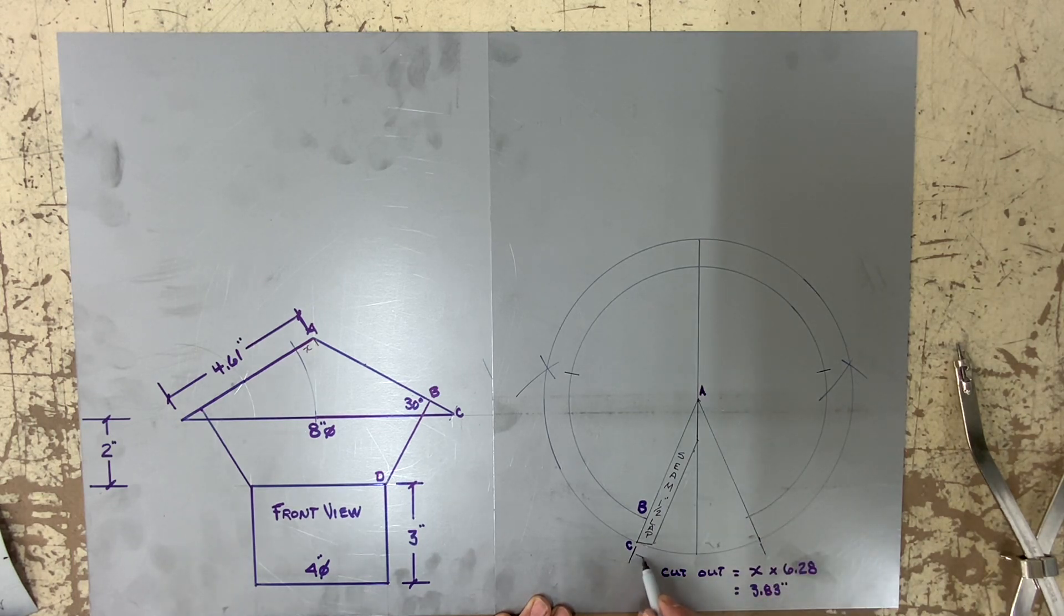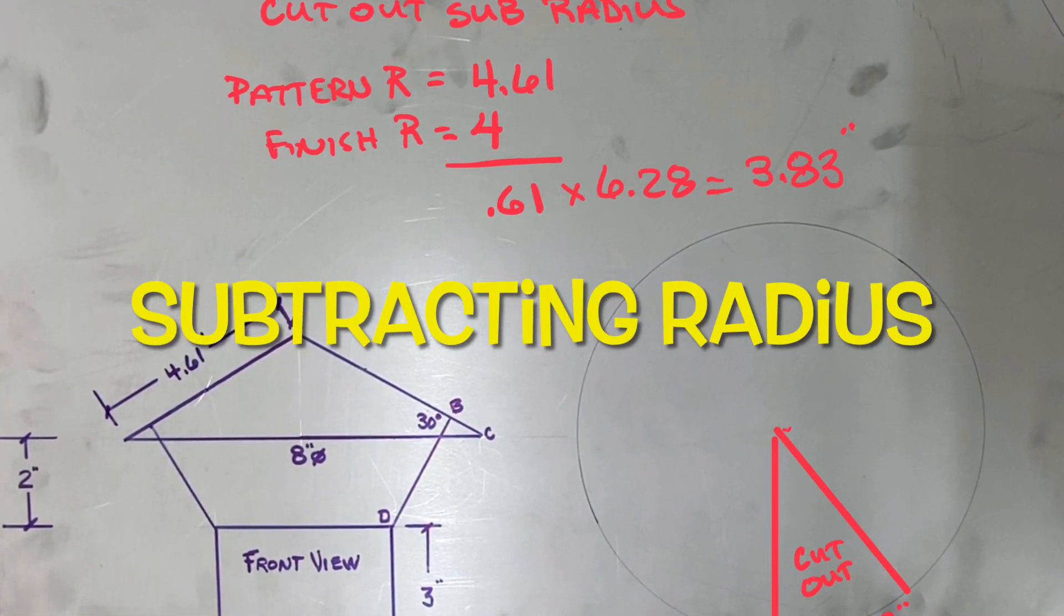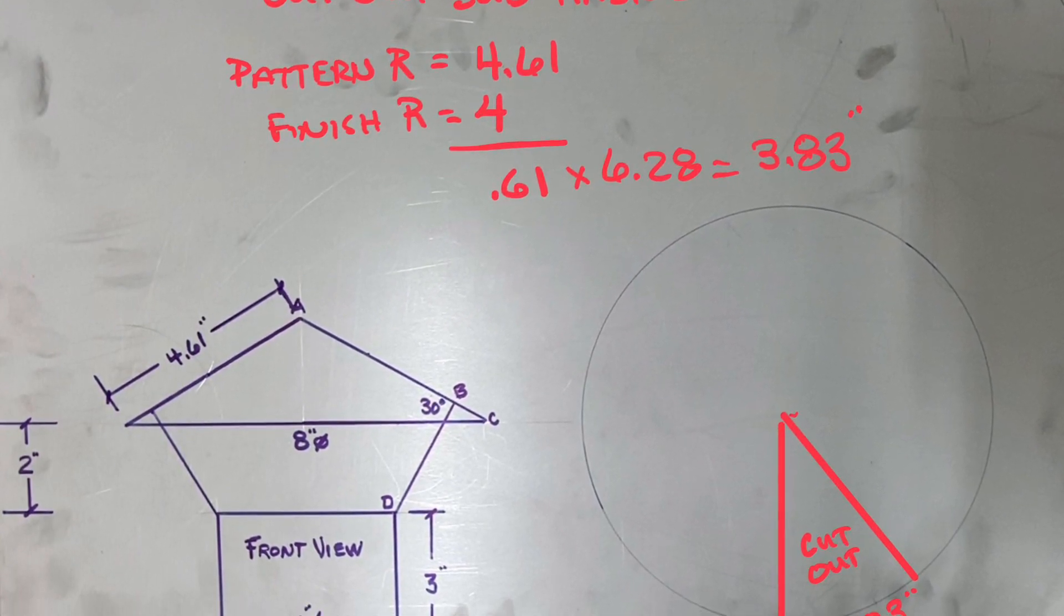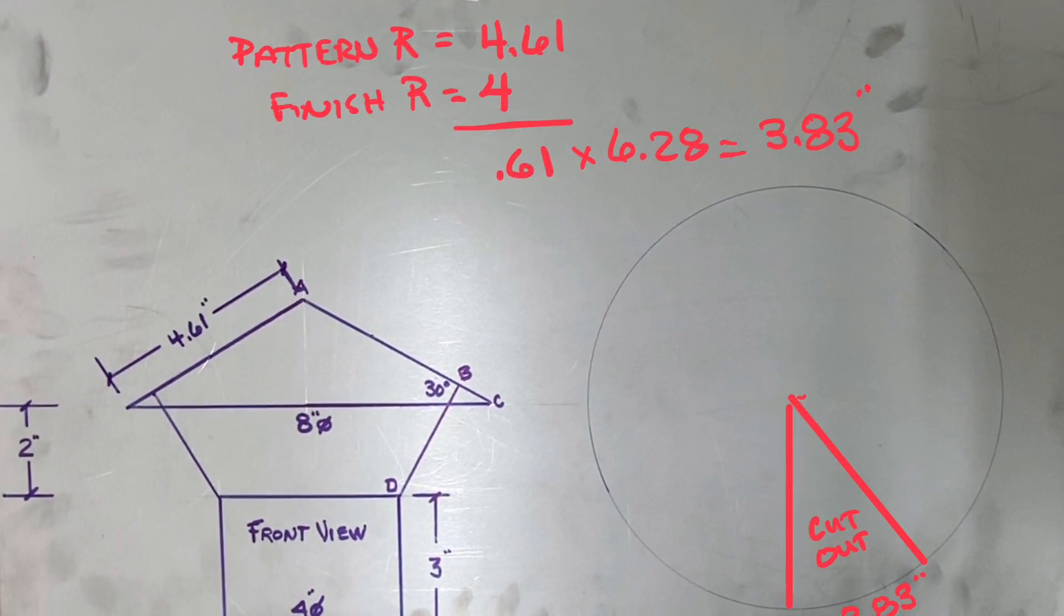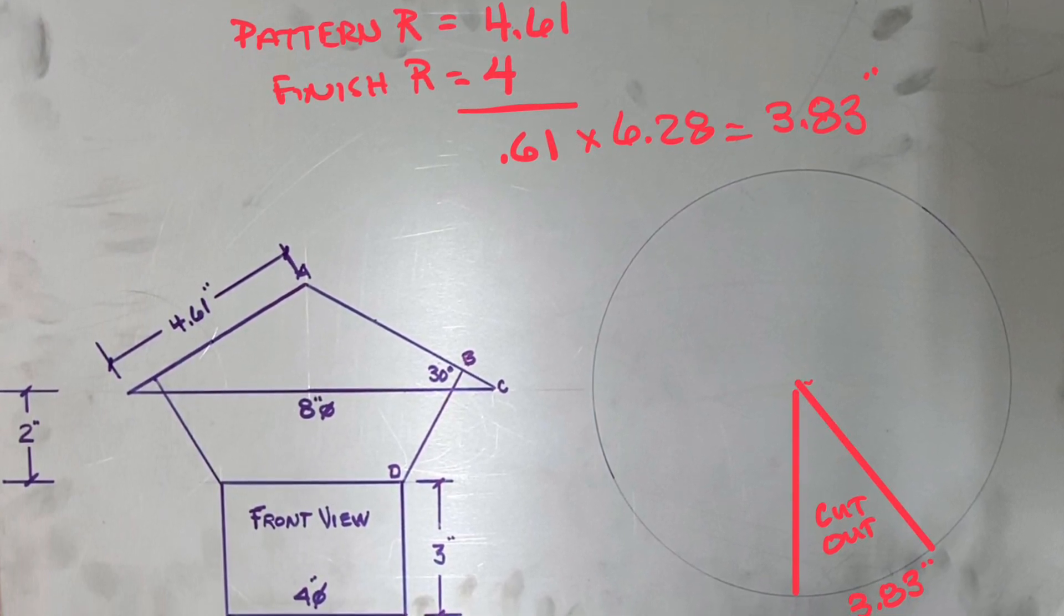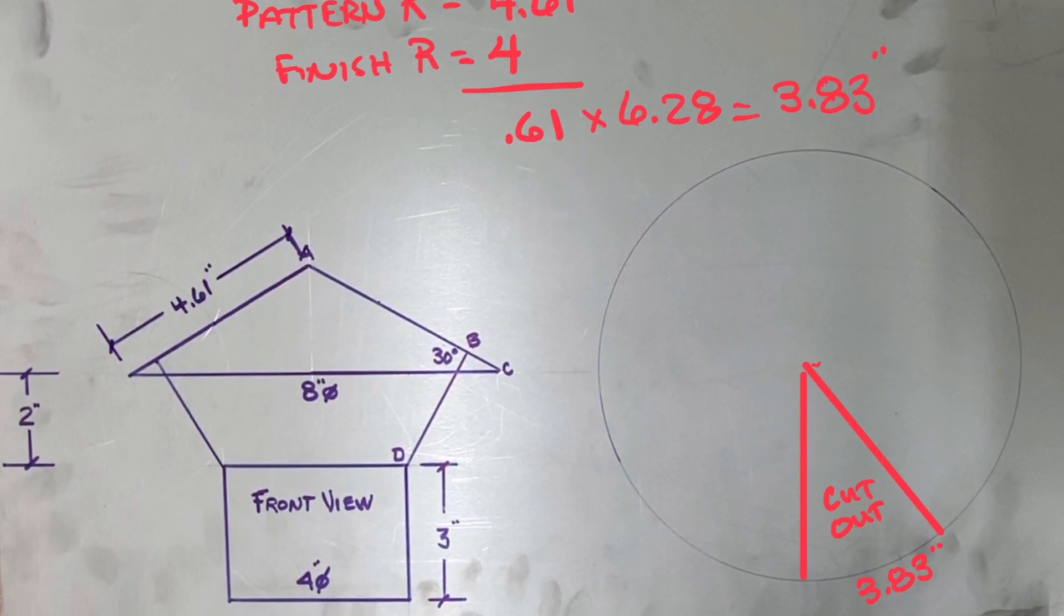So I'm subtracting 4 from 4.61, and that leaves me with X equal to 0.61 times 6.28 would equal 3.83 inches. That needs to be removed on the outside circumference of this cap. The 6.28 is a constant, meaning no matter what size of cap, you will always be using X times 6.28. Therefore to recap what I just did to find the cutout, subtracting my radiuses, I took the 4.61 was my slant radius and the 4 inch is half the diameter of the cap. I then multiply that 0.61 times 6.28 to give me my 3.83 cutout.